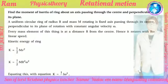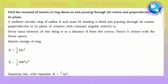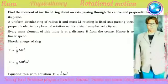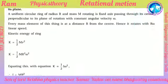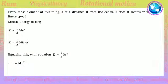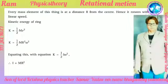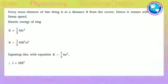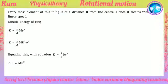Every mass element of the ring is at distance R from the center, hence it rotates with linear speed R*omega. Kinetic energy of the ring K = 1/2 mv^2 = 1/2 m(R*omega)^2 = 1/2 mR^2 omega^2. Equating with K = 1/2 I omega^2, therefore I = MR^2.